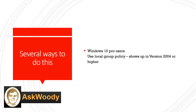There are several ways to do this, and I'm going to showcase each style or way. First off, we're going to showcase Windows 10 Professional, which has a local group policy, and it shows up in 2004 or higher.